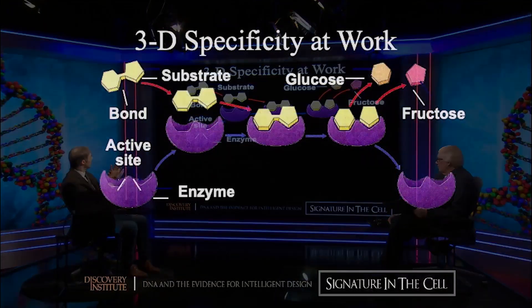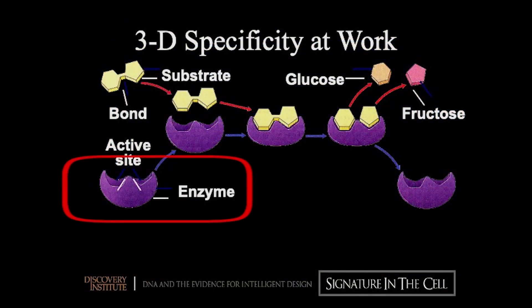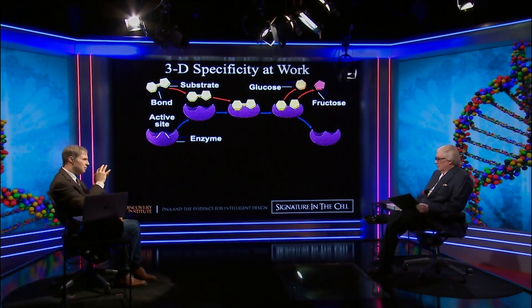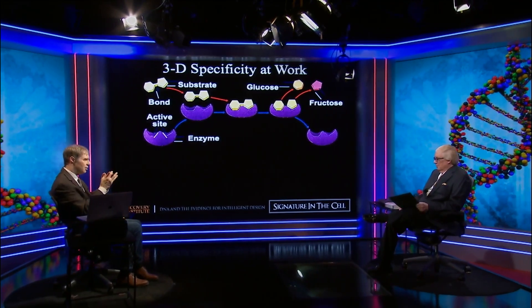You can see that the enzyme at the bottom has a hand-in-glove fit with that barbell-shaped sugar. And because of that tight fit, it can perform a catalytic reaction much faster than it would otherwise occur. The principle of functionality for proteins is the three-dimensional specificity of fit — it's a hand-in-glove.